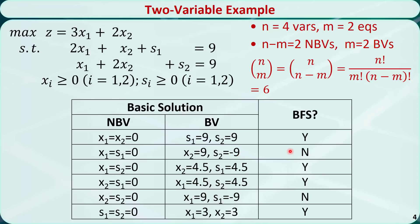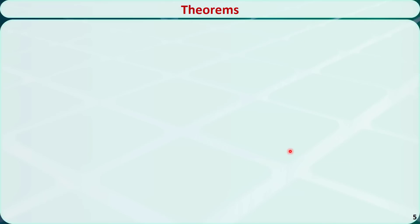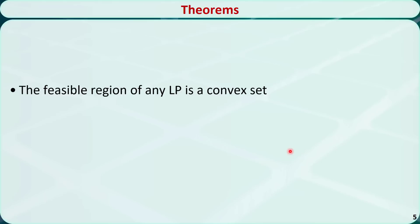Now we introduce some theorems. First, the feasible region of any linear programming problem is a convex set. This is because every linear constraint will split the space in half. Each half space is a convex set, and the intersection of convex sets is a convex set. Therefore the feasible region is a convex set.